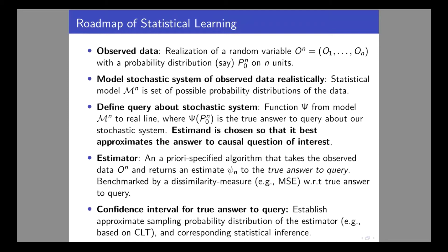In practice, many analyses are based on detective work — trying this, trying that — which does not result in a formal estimator. That's problematic because it results in all kinds of biases that make it impossible to establish whether something is real signal or just an artifact of the process. Once we have an a priori specified estimator, we can also talk about confidence intervals, which with 95% probability contain the true answer. That's called the roadmap of statistical learning.